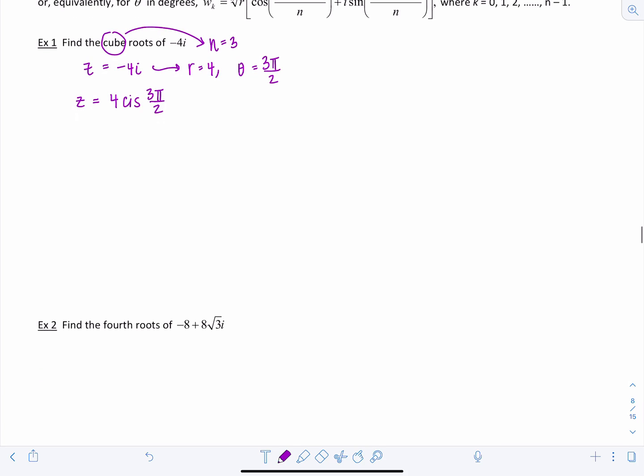Okay so now I'm going to write out the formula. So w sub k equals the cube root of 4, you take the nth root of that number, and then you're going to have cis, you take the angle, divide it by n plus 2 pi k divided by n.